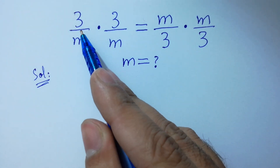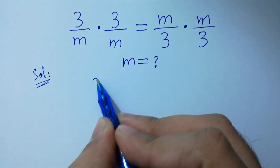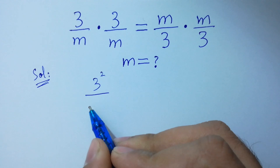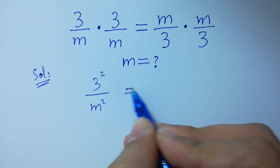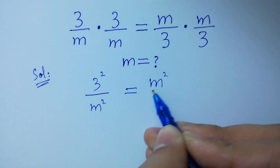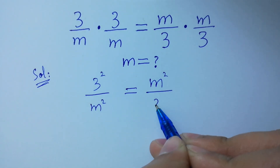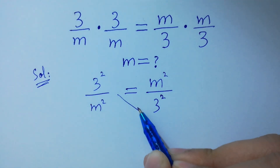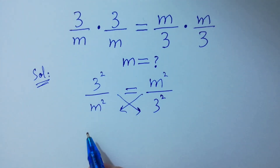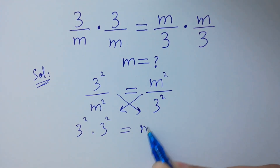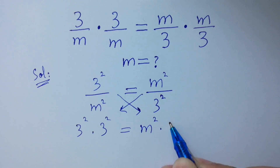You can see 3 times 3 is 3 squared, and m times m is m squared. So the left side is 3 squared over m squared, equal to m squared over 3 squared. By cross multiplication, 3 squared times 3 squared equals m squared times m squared.